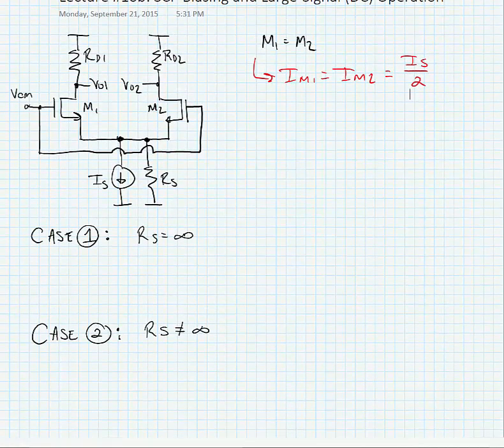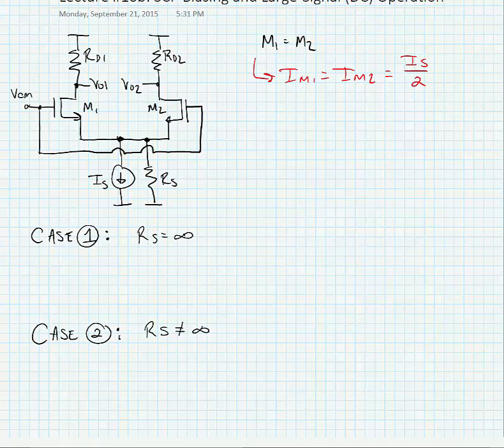Let's examine a couple of different cases here. If the resistance RS is equal to infinity, then what happens is we know VO1 is equal to VO2, so our output differential voltage is equal to zero.